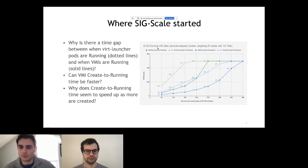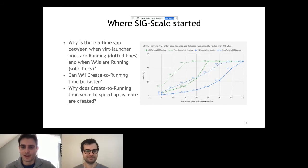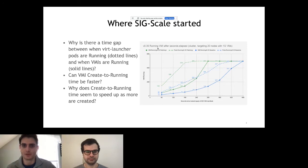We thought that gap was interesting. We obviously want to see how fast we can make these VMIs go from create to running — what can we do better, what changes can we make? We started making a few changes, measured again, and found that this green line actually moved the lines in the graph left, which is what we wanted. We were able to see there are ways we can improve performance. But we still had a lot of questions. The gap between the dotted and solid lines was a mystery. Theoretically, VMIs should go to running in a very similar amount of time as the virt-launcher pods.